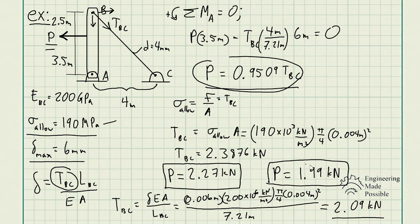In this case, we're going to go with the least force because since it's lower than 2.27, that means we will not even be close to the 190 megapascals for the allowable stress. We'll actually be lower. At the same time, we will also meet this criteria of the deformation not exceeding 6 millimeters. So we're going to choose the lesser of the two such that it meets all the criteria.